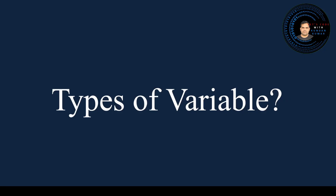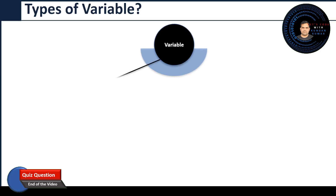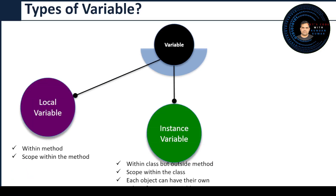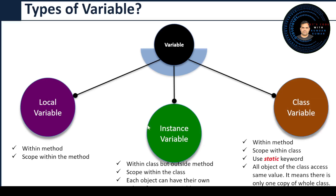Now let's see the types of variables in Java. Java variables are classified into three types: local variables, instance variables, and class variables. A local variable is written within a method or any block. The scope of a local variable is within that specific method or block — 'scope' means visibility, i.e., who can access that variable. A local variable can only be accessed within the method or block it was created in.